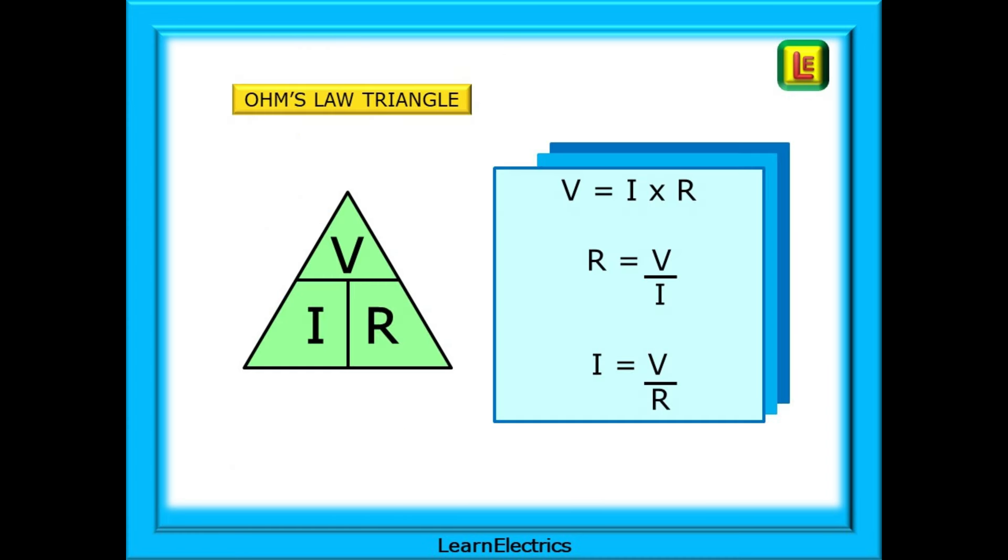This is the Ohm's law triangle, and the three easy calculations that we can make from it. Voltage is current multiplied by resistance. Resistance is found by dividing the voltage by the current, and the current, or amps, is the result of dividing the voltage by the ohms.